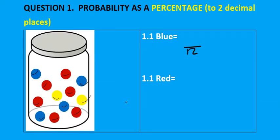The denominator will be 12. The question is asking: what is the probability of getting a blue marble? How many are blue? Let's count — one, two, three, four — four marbles are blue. So the probability of getting a blue marble would be four over 12.